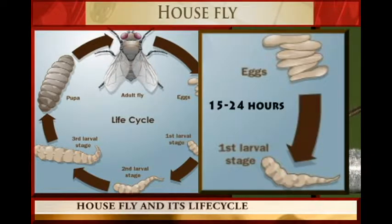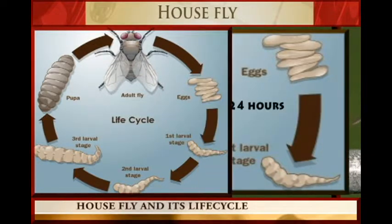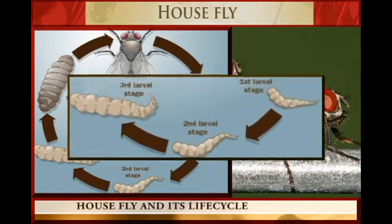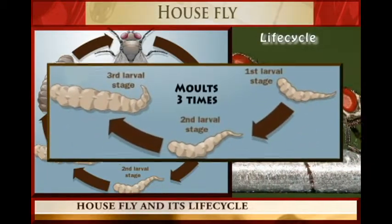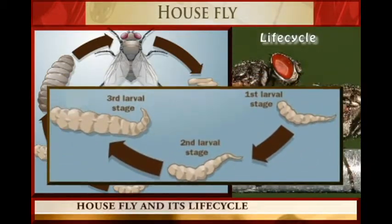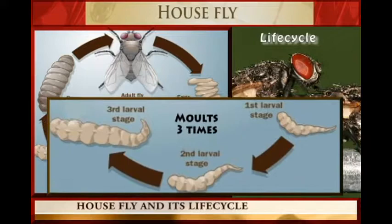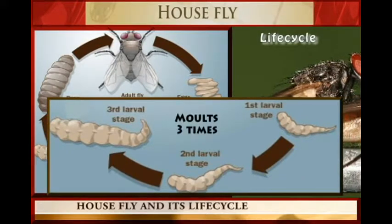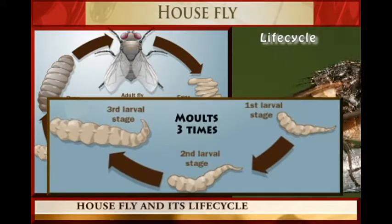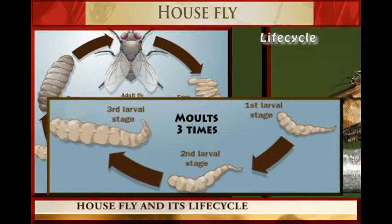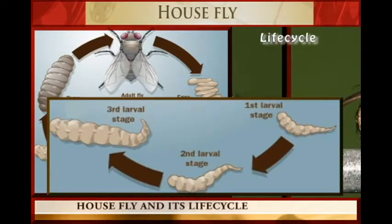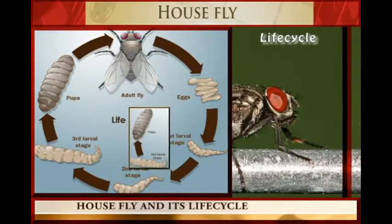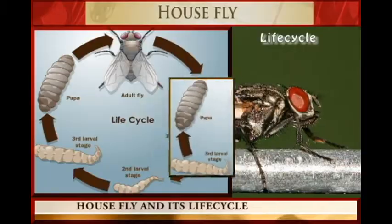The maggot will moult three times. The maggot is the larva stage of the house fly life cycle. This larva stage, which is the maggot, will pupate after four days.